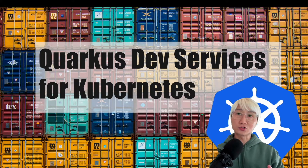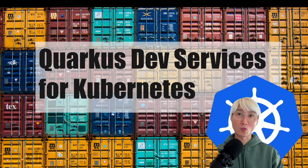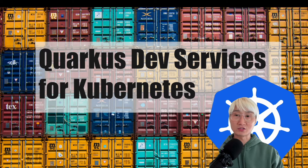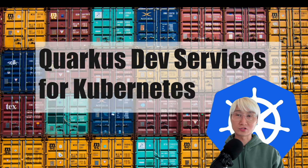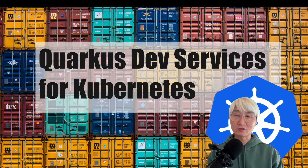If you've had a chance to take a look at my YouTube channel, you already learned about how Quarkus Dev Services works. There are a bunch of Dev Services for Database, Messaging Broker, and Keycloak for securing your application. There are a lot of benefits when you use Quarkus Dev Services. But in this case, you also need to run Kubernetes for deploying an application, but you don't have any Kubernetes cluster on your local machine or even a remote Kubernetes cluster. How do you verify your application for deploying to a Kubernetes cluster? Let's take a look at how that works with Quarkus Dev Services.